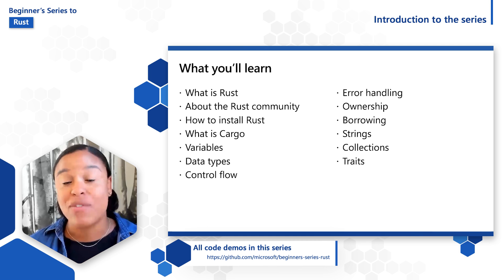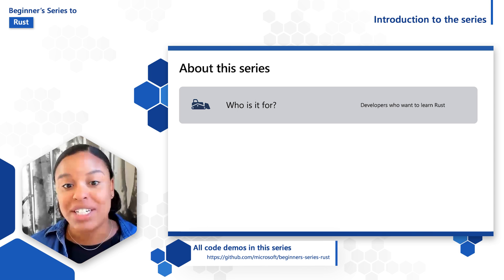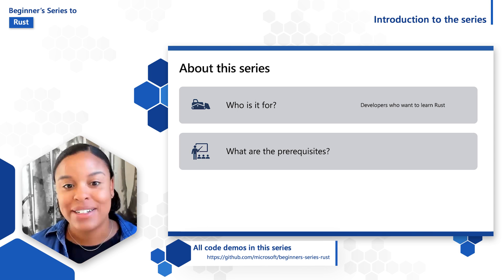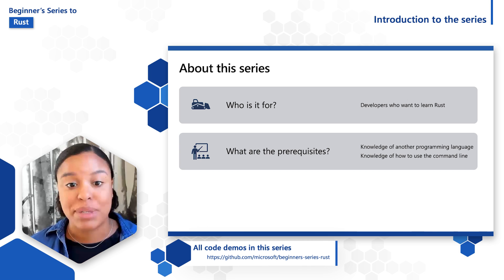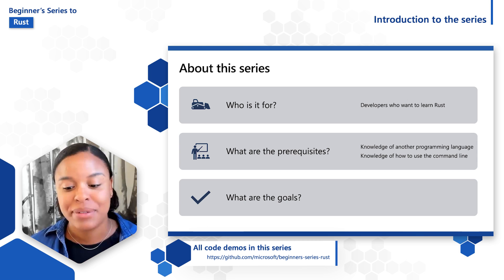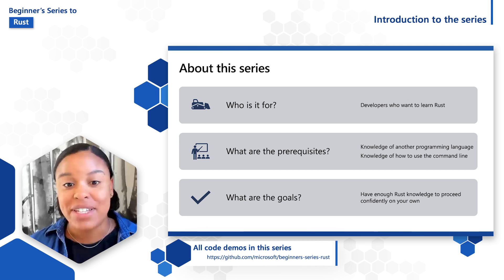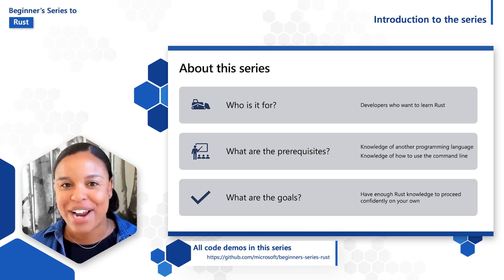Here's an overview of the full list of topics to expect. This series is for developers who are interested in and want to get started programming with Rust. While this is a beginner series for Rust, you should ideally already have some experience and familiarity with another programming language. You should also be comfortable using the command line to install programs and create directories. The goal is that by the end of this series, you will have enough knowledge to confidently go forth and write your own Rust programs.